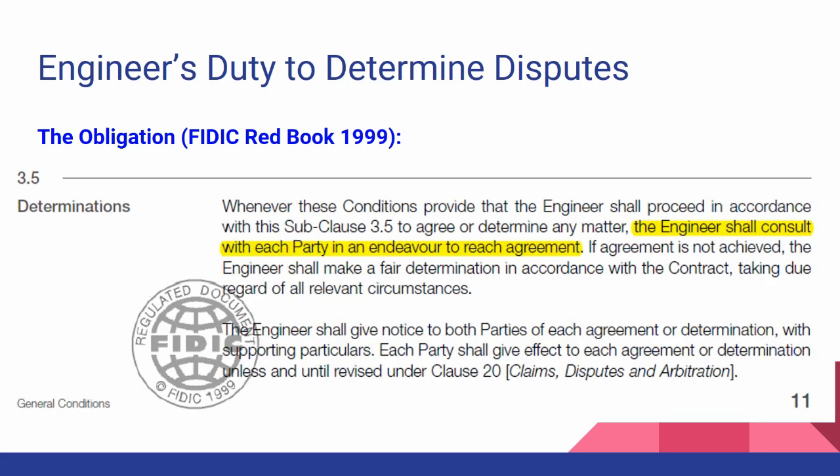In 1999, those 21 locations are all consolidated into one clause — clause 3.5 — which says the engineer 'shall consult,' the same word as in 1987, but with an added phrase: 'in an endeavor to reach an agreement.' So the engineer not only consults but has an underlying objective. The word 'endeavor' signifies effort; the engineer must strive to reach an agreement between the parties. This is the goal.